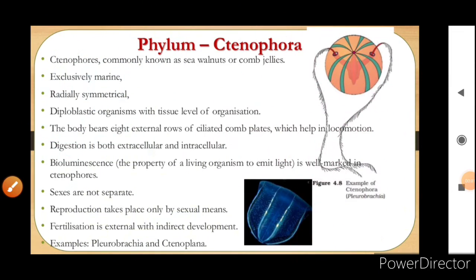Now we will start with the phylum Ctenophora. Ctenophores, or Ctenophora animals, are commonly known as sea walnuts or comb jellies. You have to remember this point that they are commonly known as sea walnuts or comb jellies.